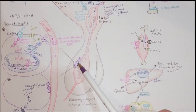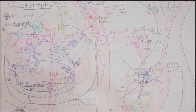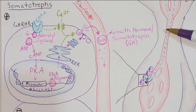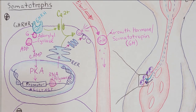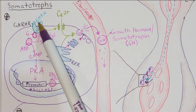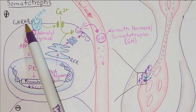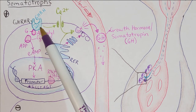This growth hormone releasing hormone is going to bind to receptors which are present on only the target cells. So here let us zoom in on these target cells. Growth hormone releasing hormone is going to bind to receptors called growth hormone releasing hormone receptors — lots of alphabet soup here — and these are seven transmembrane G protein coupled receptors.